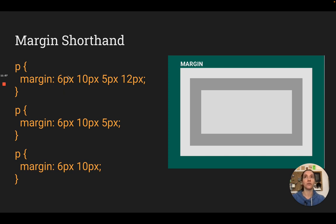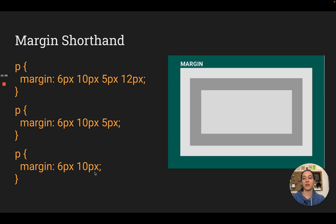If each of your margins are different, you can use all four values — it works clockwise: top, right, bottom, left. Three numbers is for when the top and bottom are different but the left and right are the same — so top, then left-and-right, then bottom. And two numbers is when top-and-bottom are the same and left-and-right are the same. I end up using the four-value and two-value shorthands the most often.